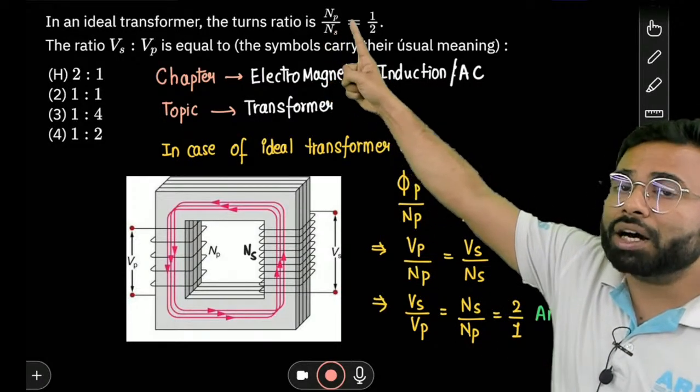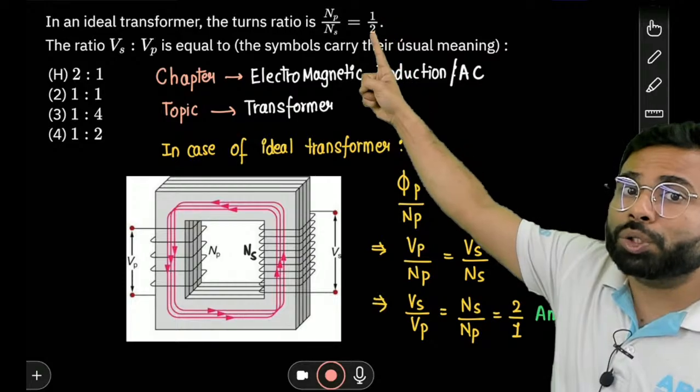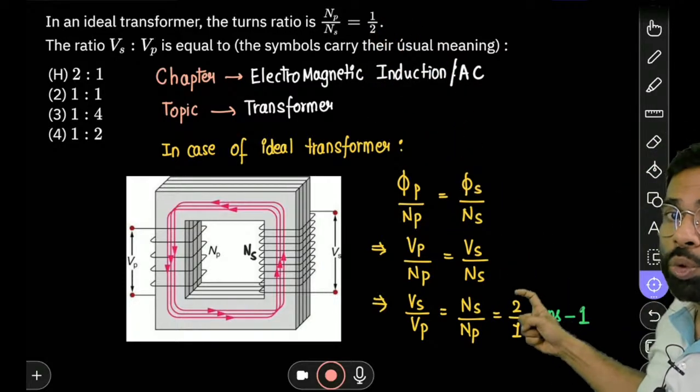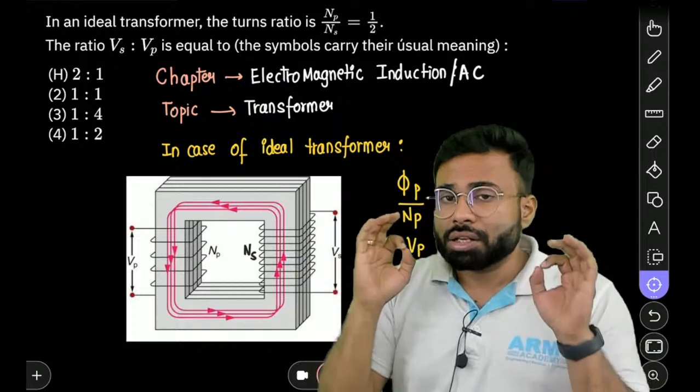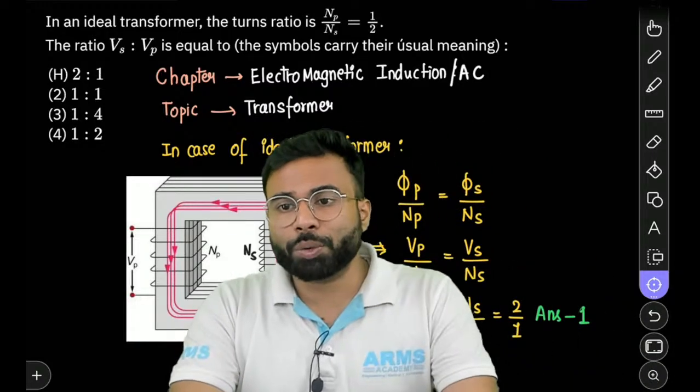And Ns upon Np, Np upon Ns is 1 upon 2. So Ns upon Np is 2 upon 1. That is the answer will be 2 is to 1. So the answer is the first option. I hope you understand the question.